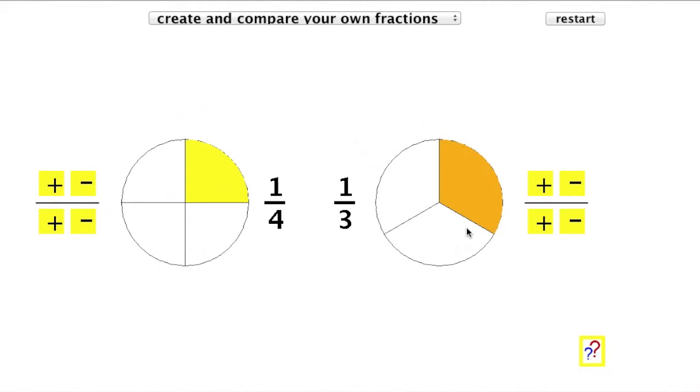Working again with the fraction on the right, I'll choose another denominator, and this time I'll choose the denominator eight. And I'll also increase the numerator—that's the number of slices selected—to two. So that's the fraction two eighths. And you can see that these two fractions, one quarter and two eighths, are exactly the same size.